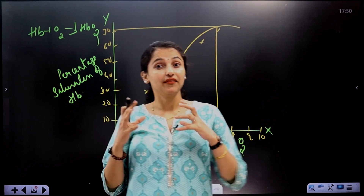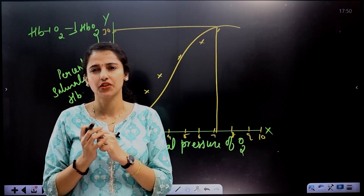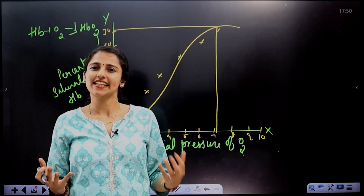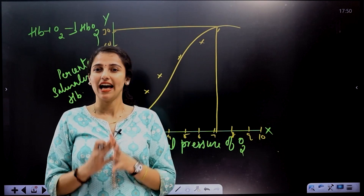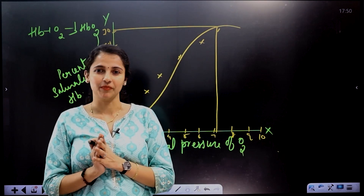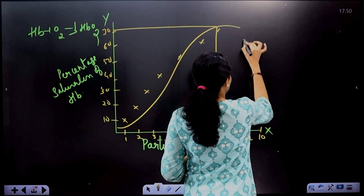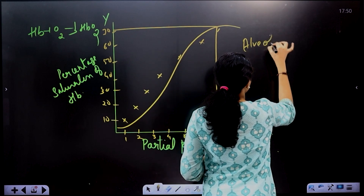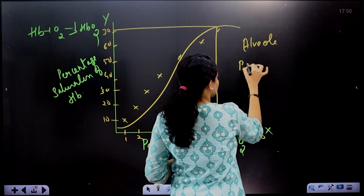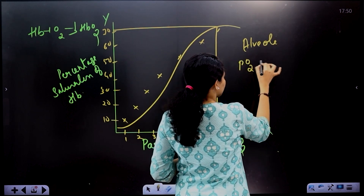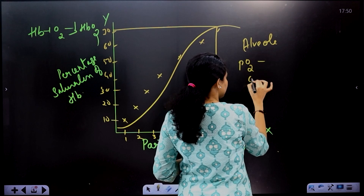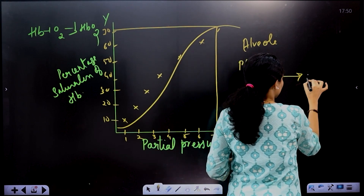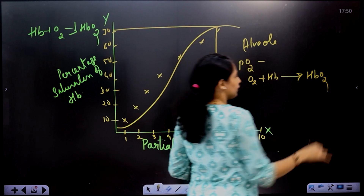How does the partial pressure of oxygen affect hemoglobin? At the alveoli, we use the partial pressure of oxygen to form oxyhemoglobin — the high partial pressure there promotes hemoglobin binding.